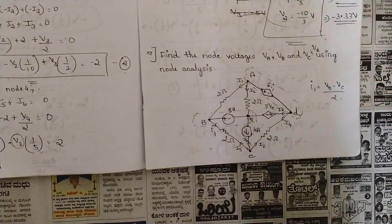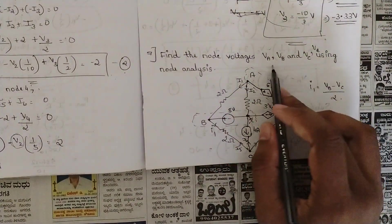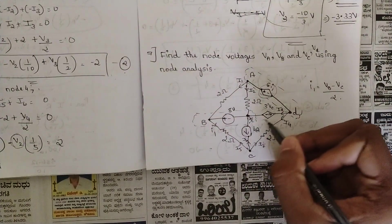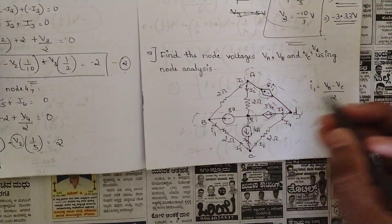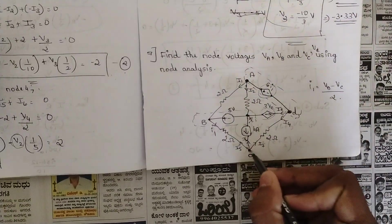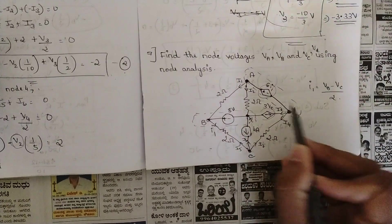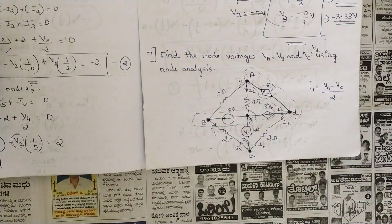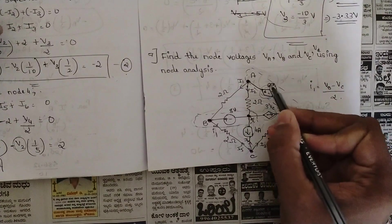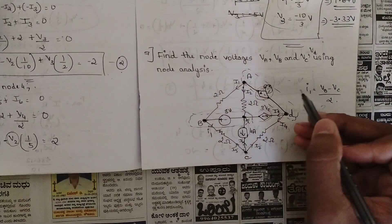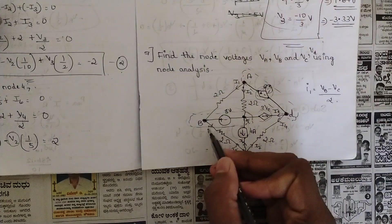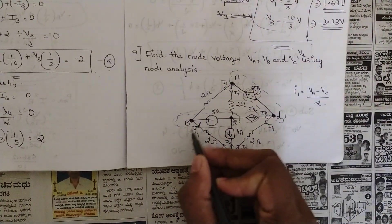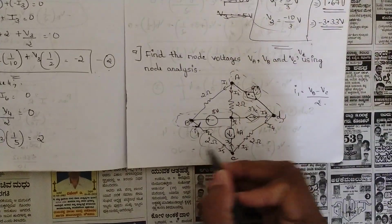The last problem of this module involves dependent sources: find node voltages Va, Vb, Vc, and Vd using node analysis. We have four nodes A, B, C, D and two super nodes — one from A to D (no resistance) and one from B to ground. This circuit has two dependent sources.